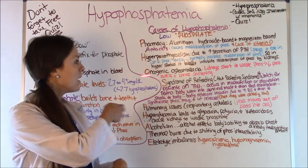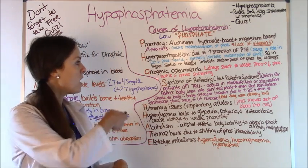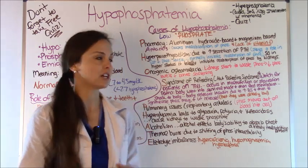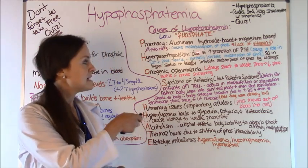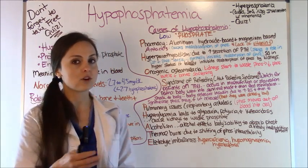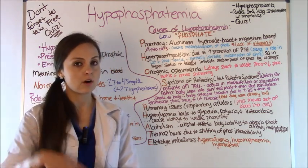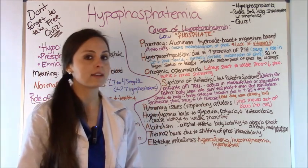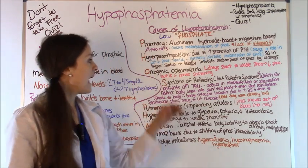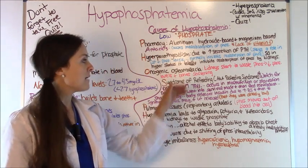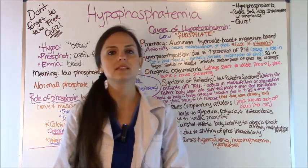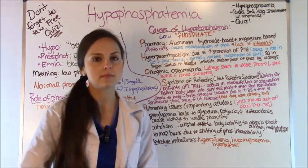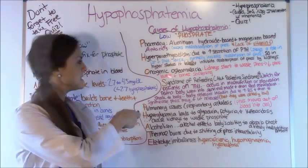O is for oncogenic osteomalacia. This is where the kidneys start to waste phosphate, decreasing your phosphate levels and causing softening of the bones. This can be due to a malignancy such as cancer.